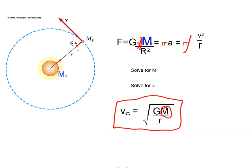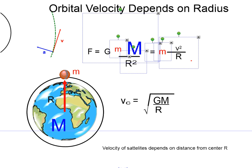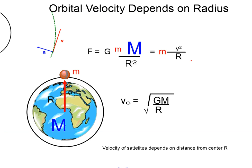This also applies to satellites orbiting a planet, like satellites orbiting Earth or the moon orbiting Earth. The velocity of these satellites is given by this equation. If the satellite is right near the Earth, R is approximately the radius of the Earth. But if the satellite is where the moon is, then R is about 60 times the radius of the Earth - much further away. The velocity of satellites depends on the distance from center R.